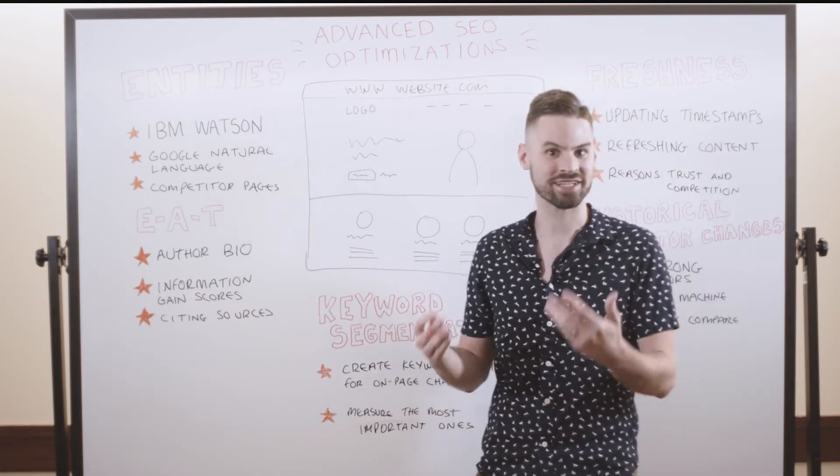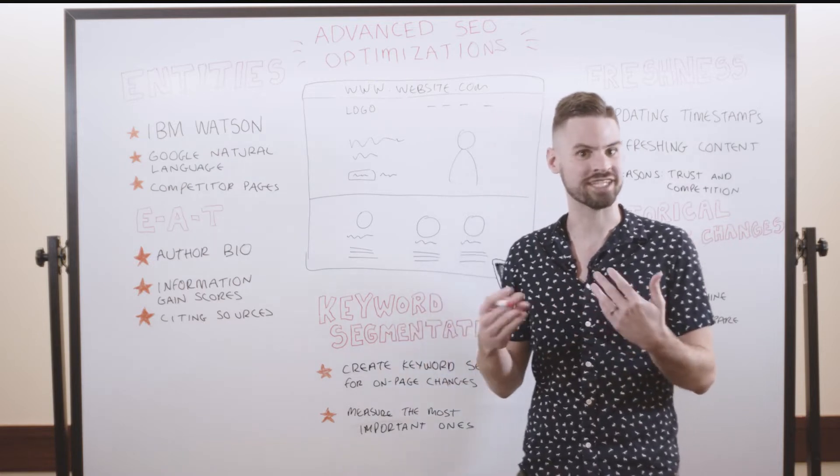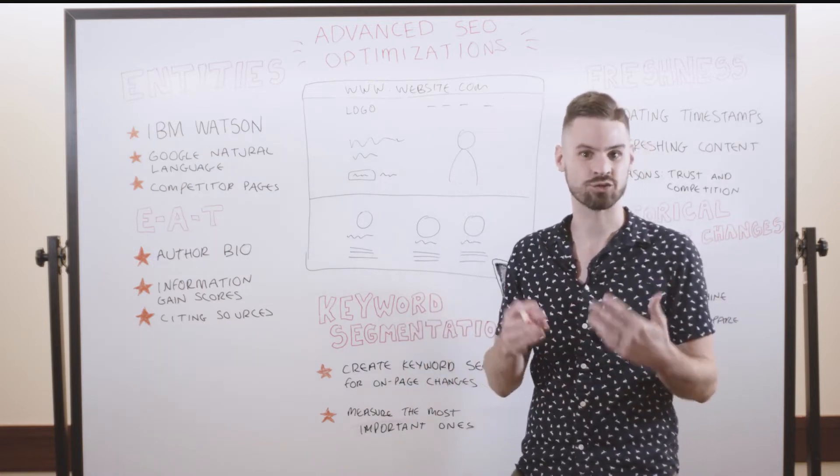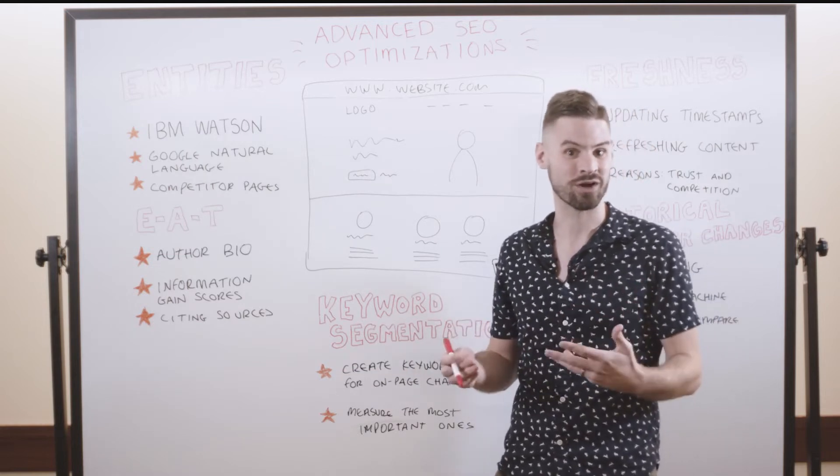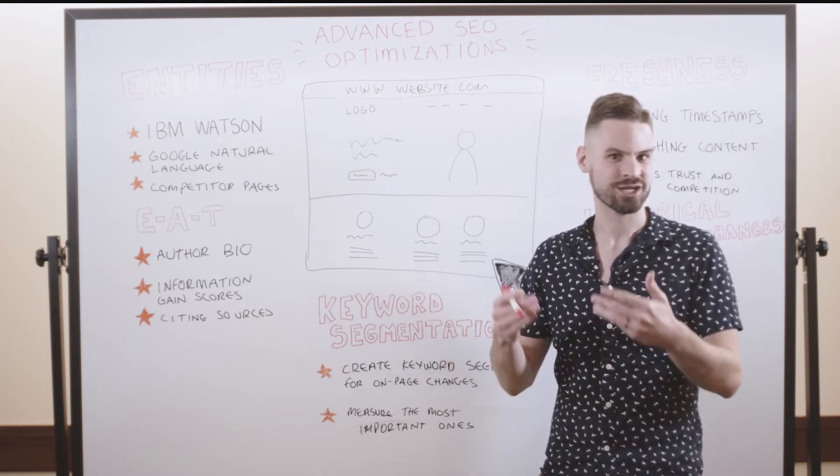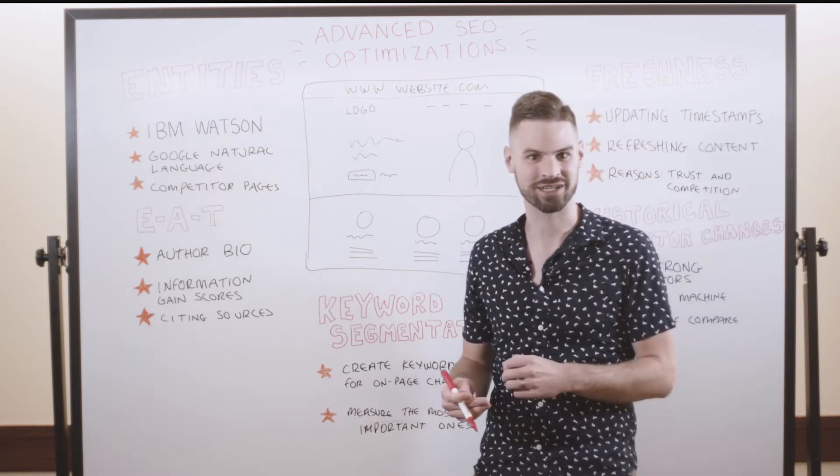Commonly in SEO, when we think about on-page optimizations, we're typically thinking about core places to include the keywords, such as the title, the H1, the URL within the content. But some people might be wondering, how can you take your on-page optimizations to the next level and get beyond some of those basic tactics? So that's what I want to cover today.